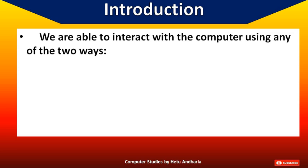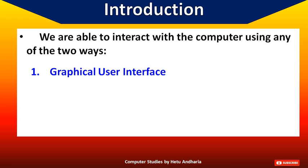We are able to interact with the computer using two methods. First is graphical user interface — that is the thing which we are using right now. There are graphics, you can see different colors, you can use the mouse, you can use the keyboard, you can tap something. This is graphical user interface.